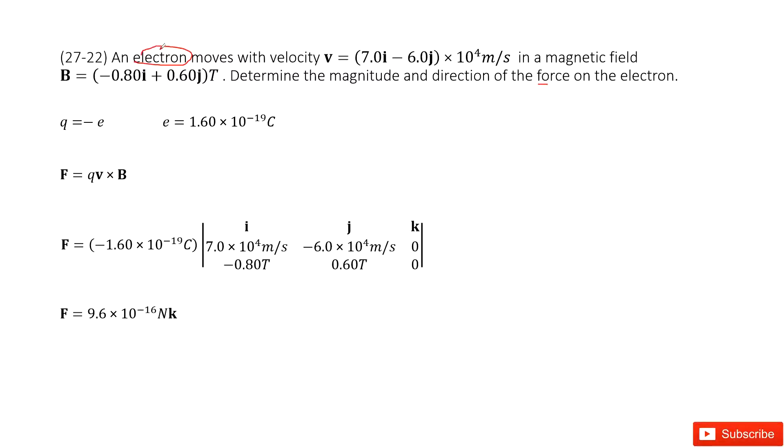And then the electron carries negative charge, so we can see Q is negative e, carrying one unit negative charge.